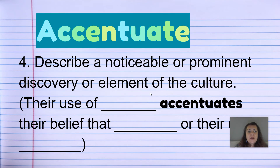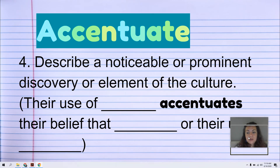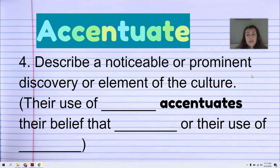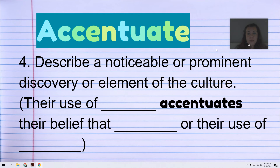Then accentuate — for this one, you could look into the culture you've decided to write about and describe a noticeable or prominent discovery or element of that culture. For example, using ancient Egypt, I could say, 'The use of mummies and their elaborate funeral rites accentuates their belief in the afterlife.' Think about the culture you're interested in, what something they do, and what is accentuated by that. You could also focus on yourself — maybe your curiosity about a culture accentuates some aspect of yourself. This is the hardest sentence, but just give it a try.